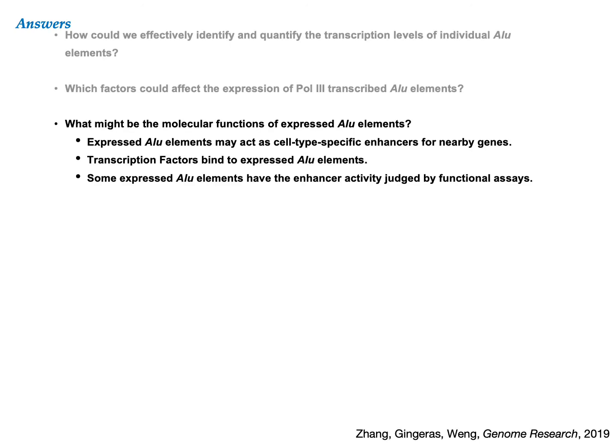Finally, we analyzed the CRISPR QTL data, which yielded 664 enhancer-gene pairs by introducing random combinations of Cas9-mediated CRISPR perturbation into 5,920 predicted enhancers and measuring their effects using single-cell transcriptome profiling in K562 cells. Fifteen Alu elements expressed in K562 were located in the enhancer regions they surveyed, and two of these Alu elements showed significant regulatory effects on the expression of neighboring genes. In response to our third question, we found that expressed Alu elements may act as cell-type-specific enhancers for nearby genes. We found many transcription factors bind to expressed Alu elements. Some expressed Alu elements have enhancer activities judged by functional assays.